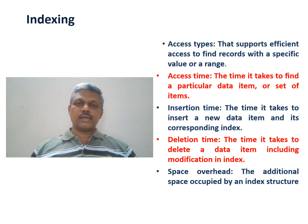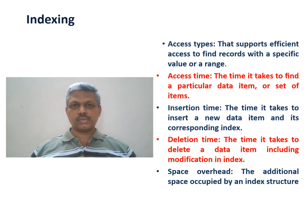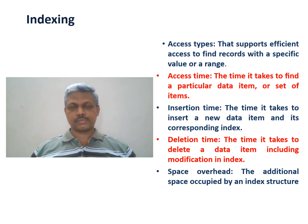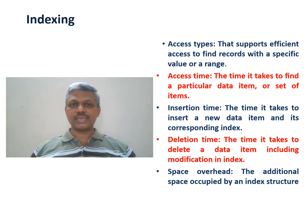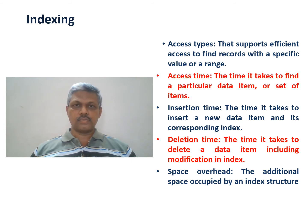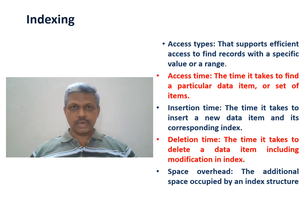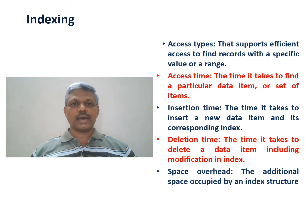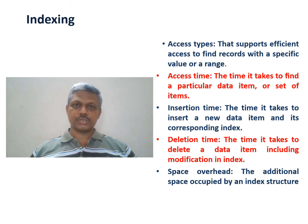Now, once we understand an index, the next question is: how many types of indexes can be built, and what are the parameters that govern a best or better index? There are four or five parameters. The first one is access type — what type of access does it provide to the actual record from the index? Are we able to go directly to the record, or are we going to the page where it is present, or to the bucket where it is present? That kind of access type dictates the efficiency of the index we create.